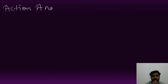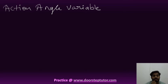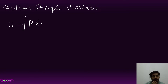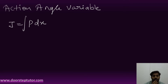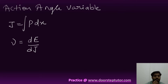The action-angle variable is used to find all periodicities of periodic motion without going into detail of the Hamilton-Jacobi system. It is denoted by J, which equals the integral of p dx, where p is the momentum and dx is related to the coordinate system. We also need to find the relation between energy and frequency, which is given by dE/dJ.